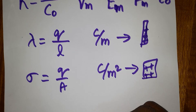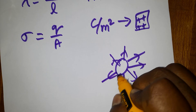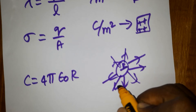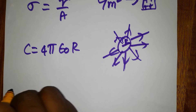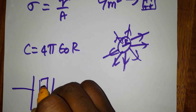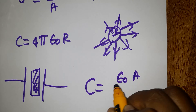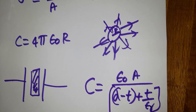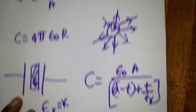For a spherical capacitor, the capacitance is C = 4πε₀R, where R is the radius of the sphere. If a dielectric medium of thickness t is introduced, the capacitance becomes C = ε₀A / (d − t + t/k), where k is the relative permittivity (dielectric constant).